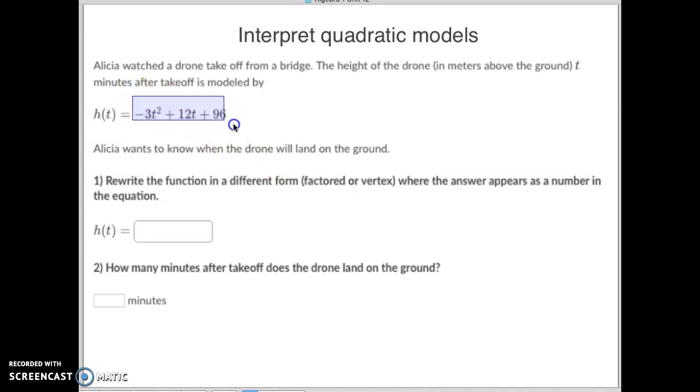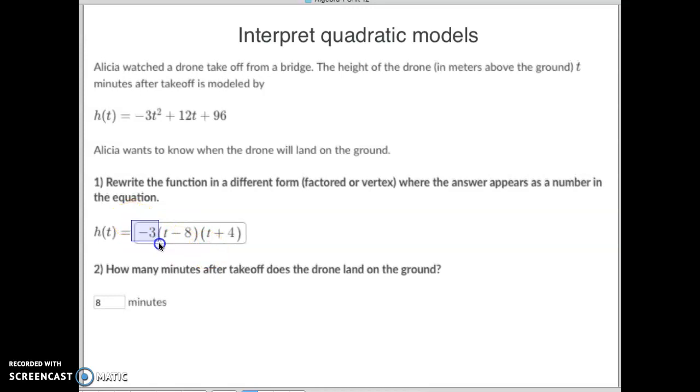So we're going to take this and put it into factored form. The first thing we would do is we want to get rid of this negative three in front of everything, so we're going to take out the negative three. You would end up with your t squared minus 4t minus 32, and then you're going to factor that. If you don't know how to do it quickly, then you just do your diamonds and rectangles and factor the inside part. What you get when you get there is you got the negative 3, the t minus 8, and the t plus 4.